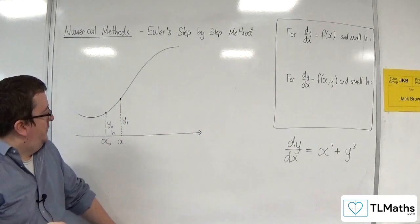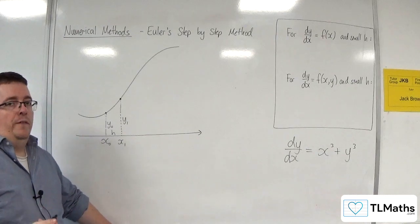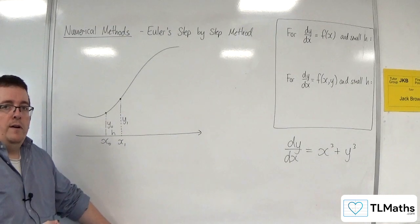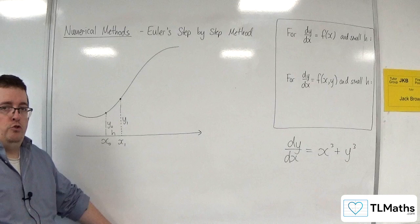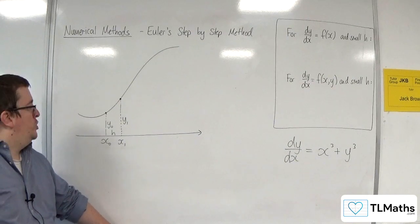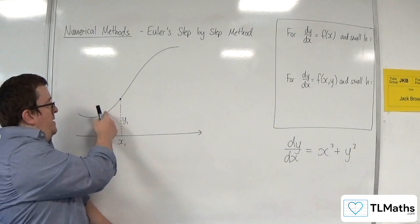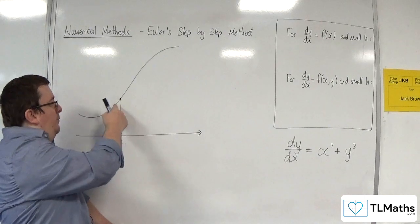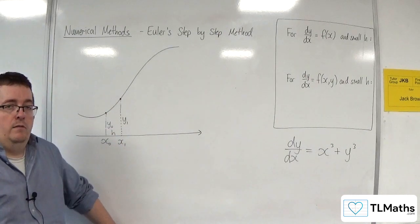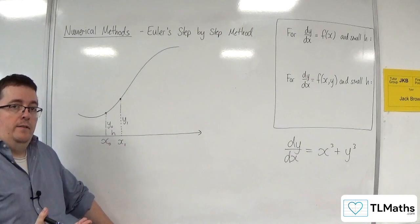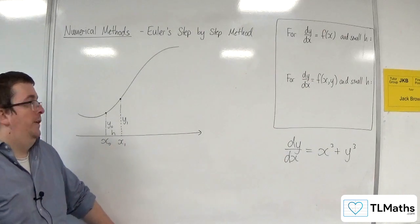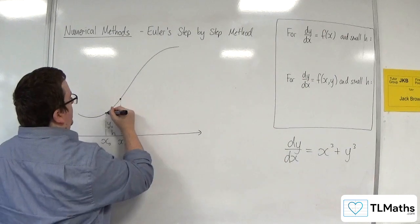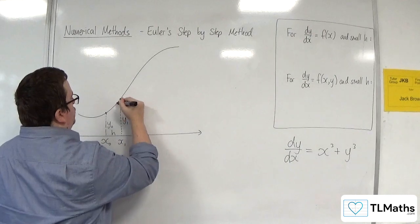Now the idea is that if I know a point on the curve, and that would be given by one of my initial conditions, or a boundary condition for the differential equation. If I know that point, then maybe I can get to this point using a straight line. If it's close enough, I could approximate this using a straight line.